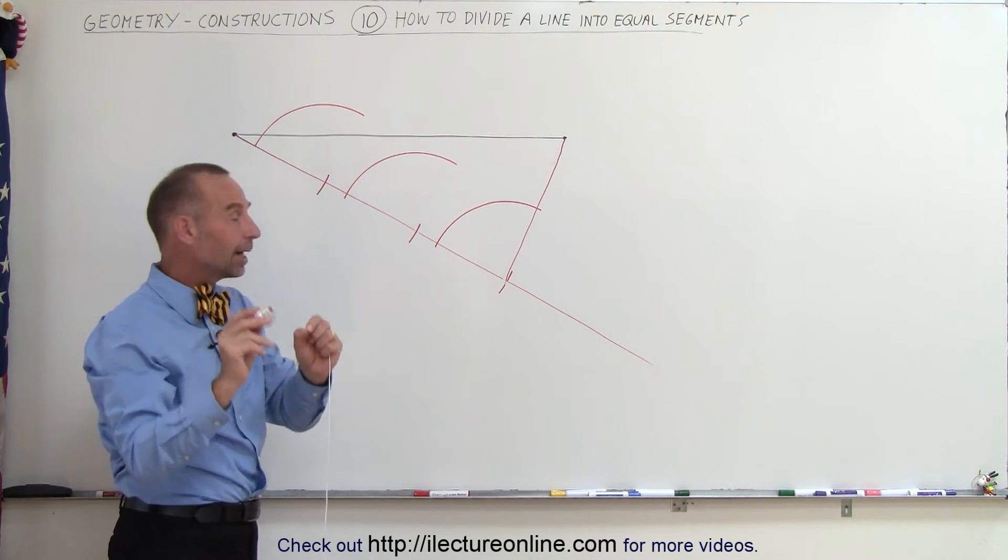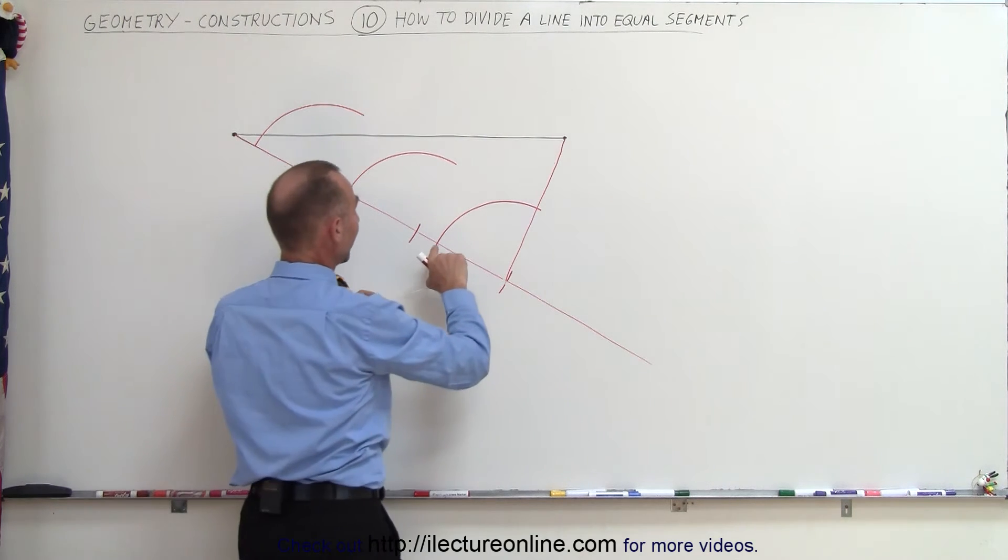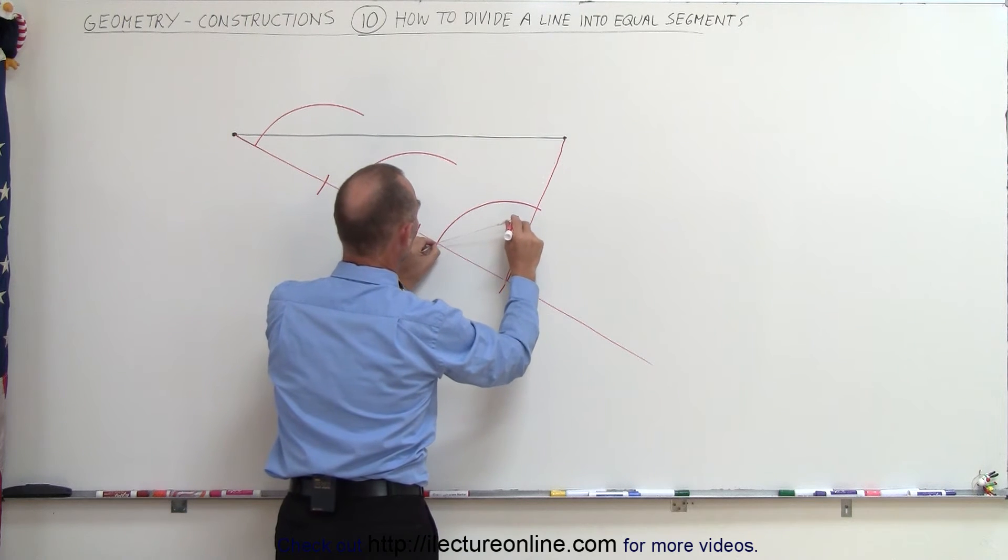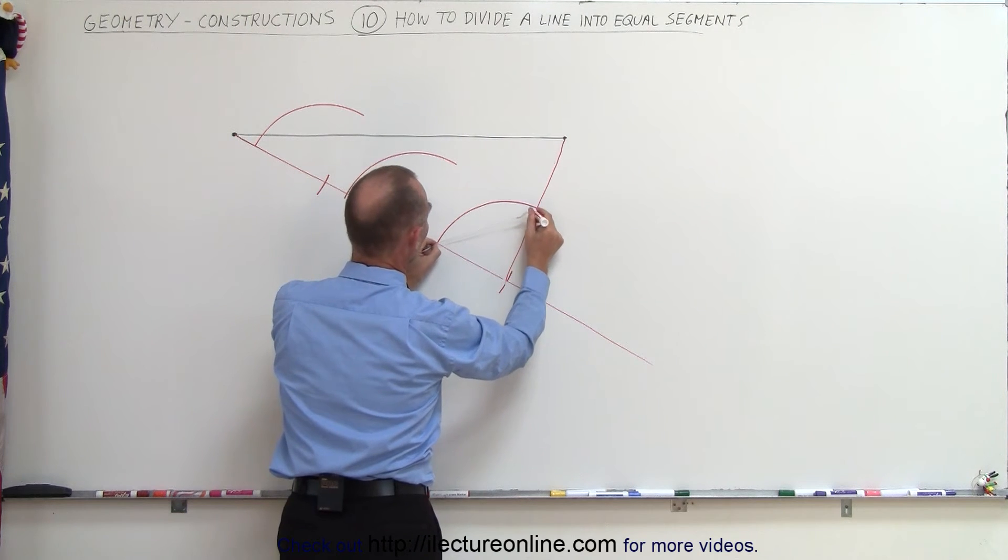So now I adjust my compass length so that I find the distance from this point to this point right there. So I adjust the length like that until I reach that point right there so I can make a small little tick mark.